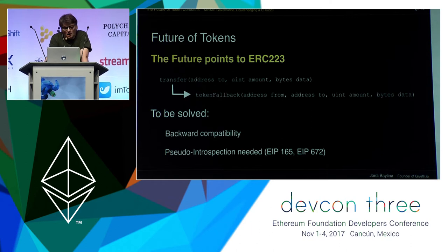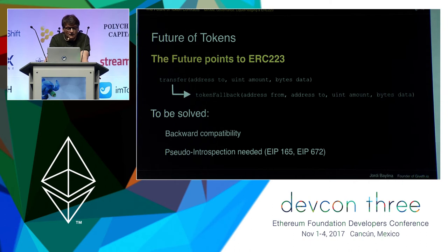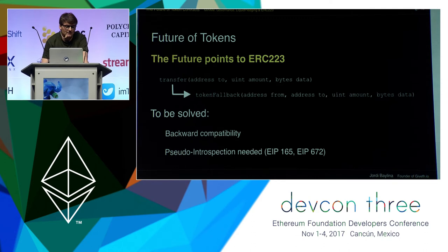Let's talk now about the future of token smart contracts. The future clearly points to the ERC 223 standard proposal. There is mainly one operation in this standard: transfer. And with this transfer, you can attach data. Once the transfer is done, if the recipient is a contract, the token fallback function of the recipient is called with this extra data. The main idea of this standard is to work very much like Ether works right now. This standard is not ready yet.